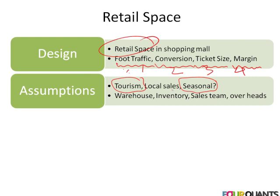In terms of assumptions, the three I'm primarily interested in are: what part of traffic comes through tourism, what part is local sales, and what part is cyclical or seasonal in nature. For example, do people buy more ice cream in fall, spring, winter, or summer? Do they buy more body lotions in fall, spring, winter, or summer? And so on.